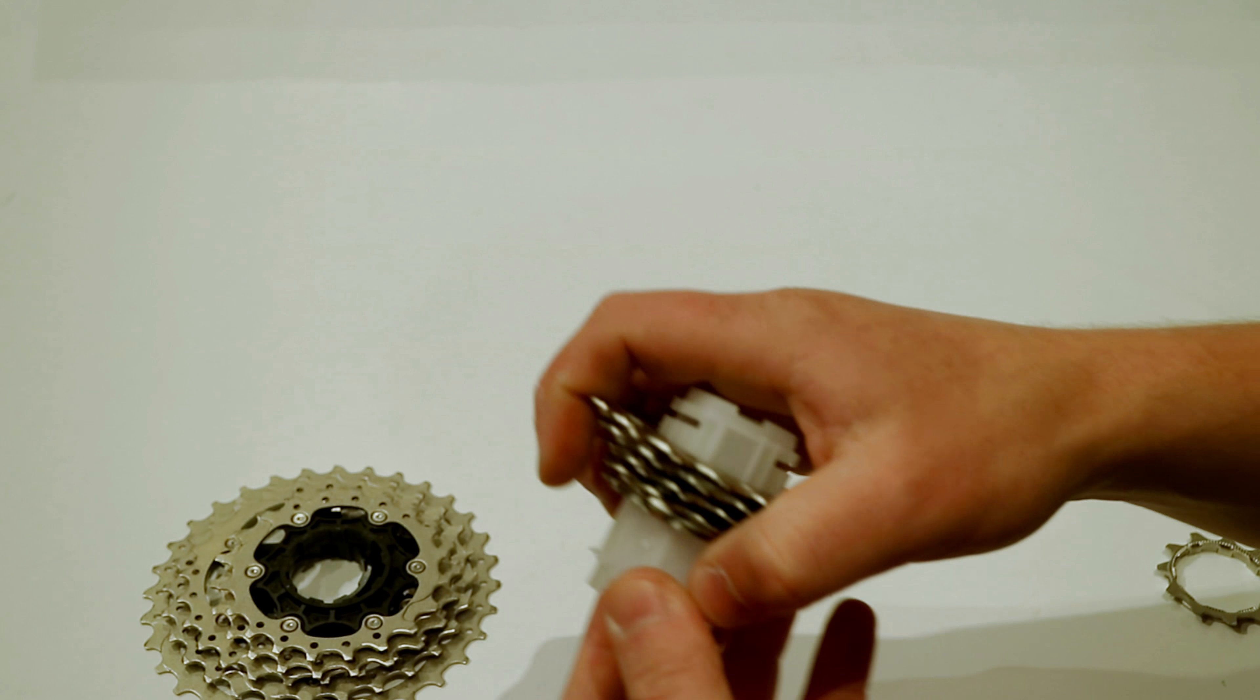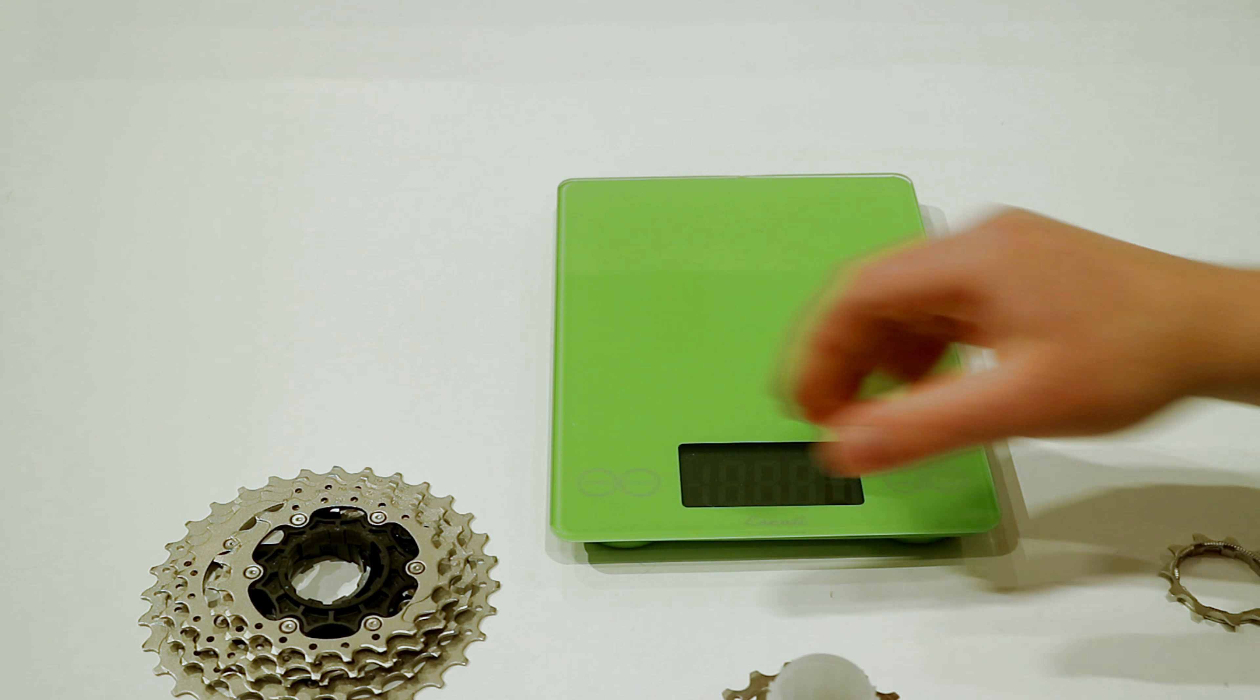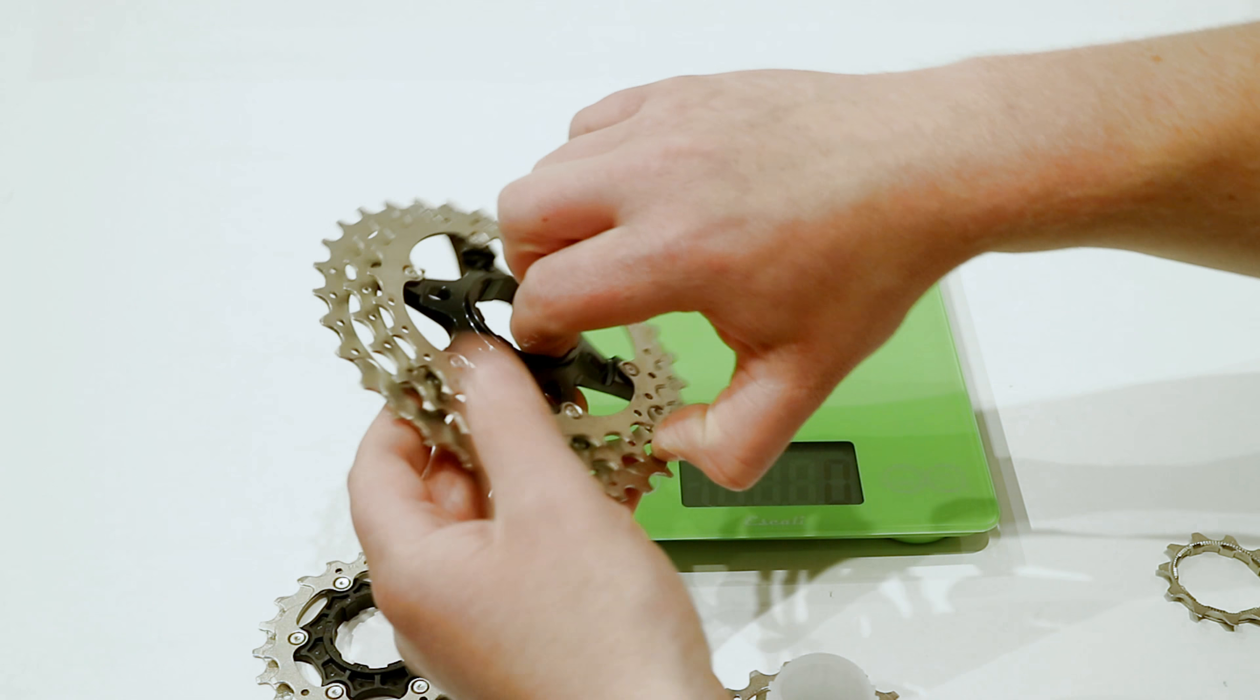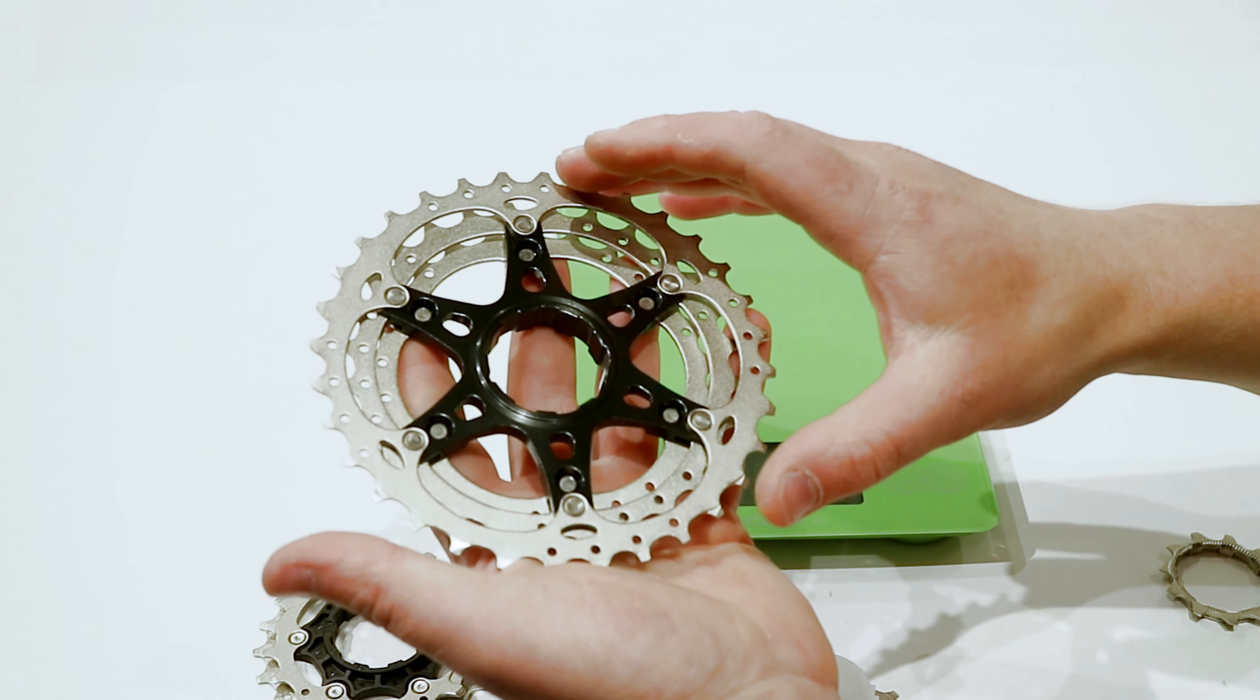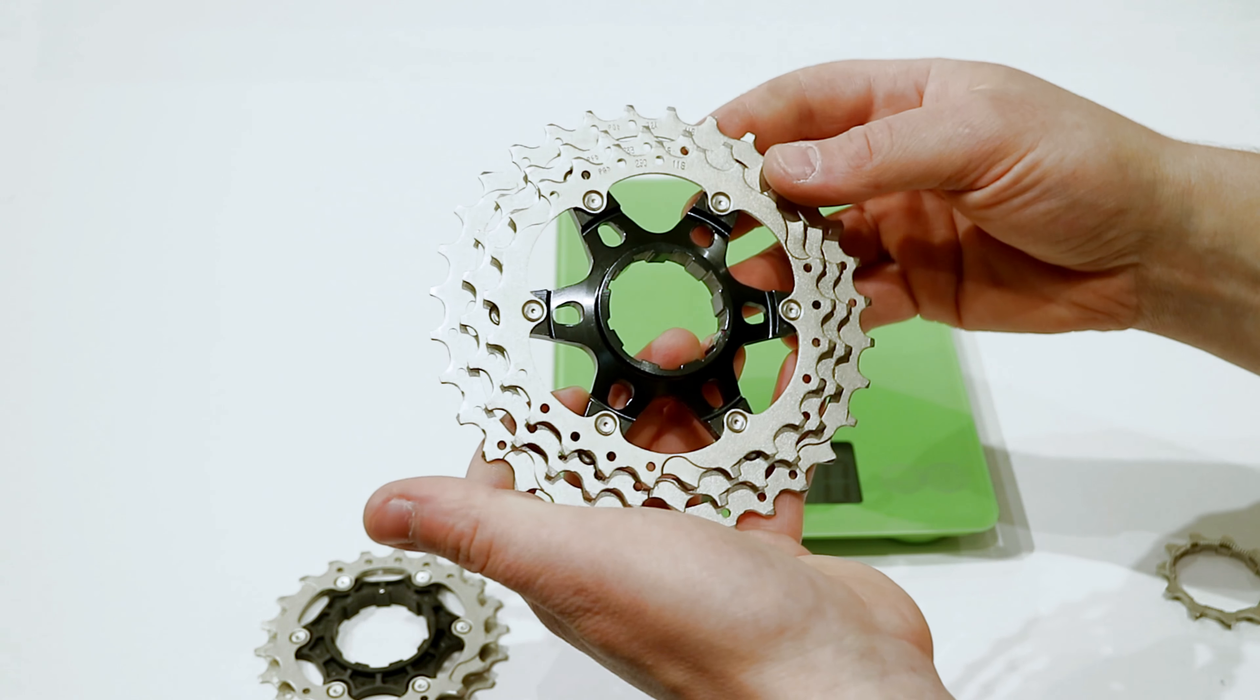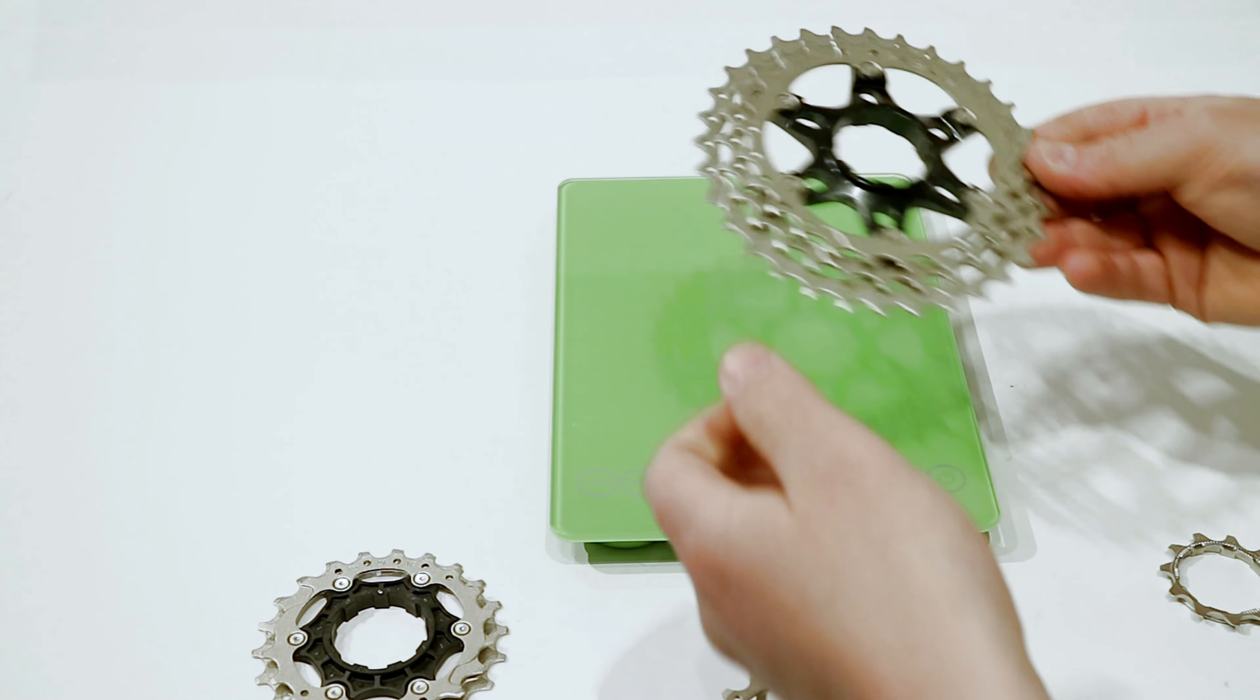And then the rest of the cogs are all going to be loose. So with the scale out, let's go ahead and see exactly what this 11-32 cassette weighs in at. So they do still make one size larger, which is the 11-34. But I think most people are going to end up probably maxing out at this 11-32.